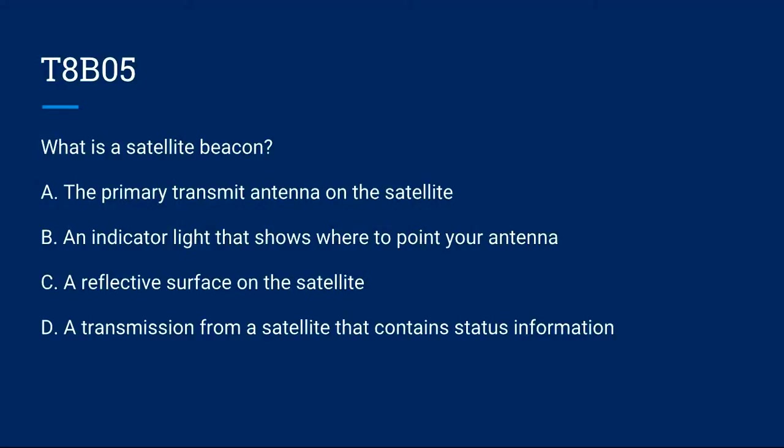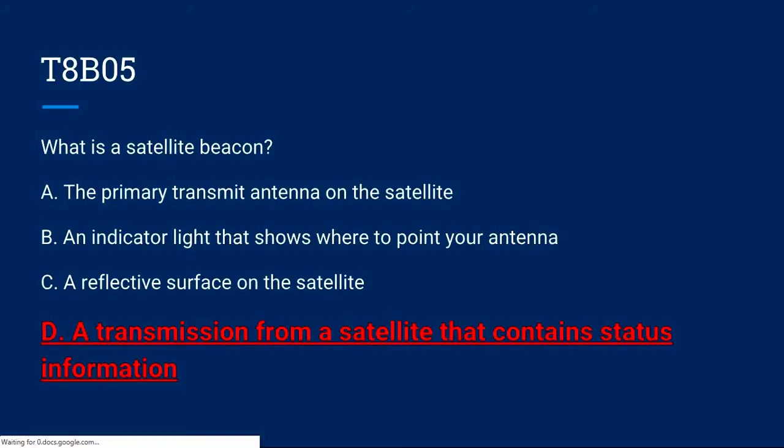T8B05: What is a satellite beacon? A. The primary transmit antenna on the satellite. B. An indicator light that shows where to point your antenna. C. A reflective surface on the satellite. Or D. A transmission from a satellite that contains status information. The correct answer is D: a transmission from a satellite that contains status information.